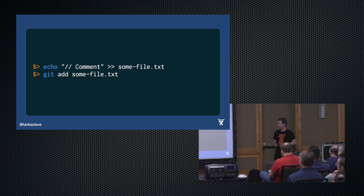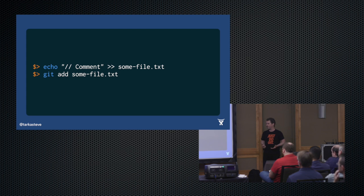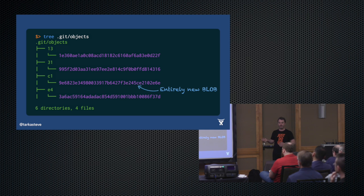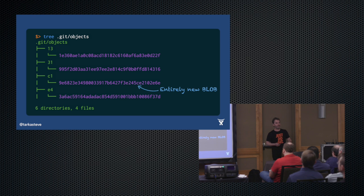Just to show another aspect of this: we're going to make a minor change to that file — add a very simple comment in it, then git add it and look at the tree again. There is an entirely new blob. This is the content-addressable system again — because that file is no longer empty, it is now a completely separate object. So at its core, git is really just objects and objects that point at each other.